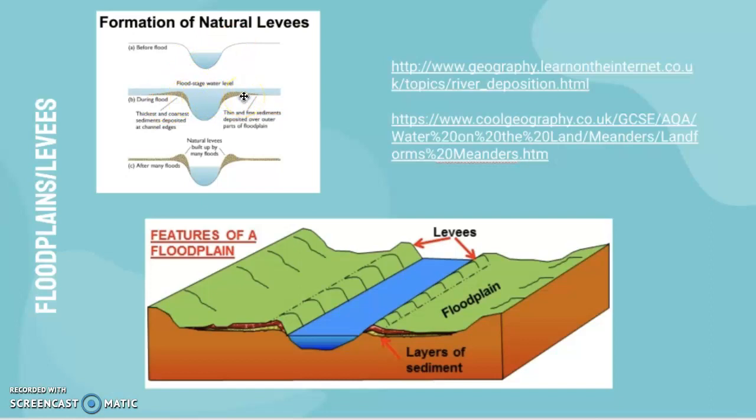In that event, the sediment in the river is actually deposited on the banks of the river. The thickest and coarsest sediments are deposited first, then the thin and fine sediments are deposited afterwards. As it keeps flooding over time, these natural levees eventually build up.